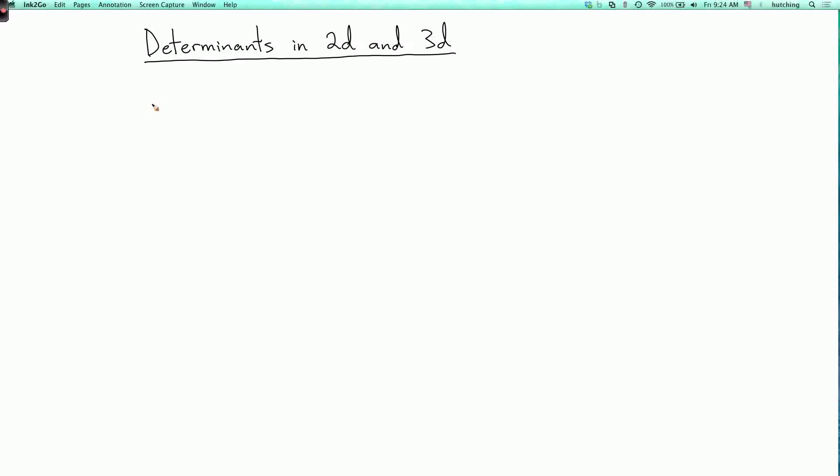To prepare for the definition of cross product, we now need to briefly review the definition of determinants in two and three dimensions. So let's start with the two-dimensional case.